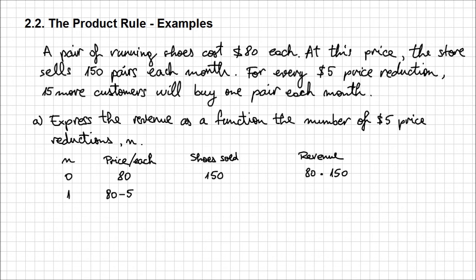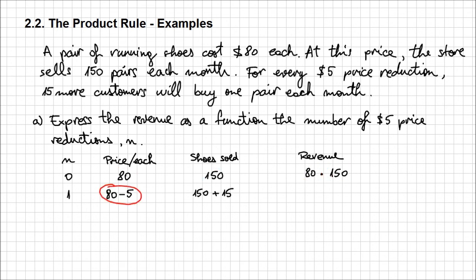In this case, the number of shoes being sold each month is going to be 150 plus 15, because for each price reduction 15 more customers will buy a pair. So to the 150 already sold, you're going to have 15 more customers for one price reduction. The revenue is the product of price per unit times the number of shoes sold, using those expressions.